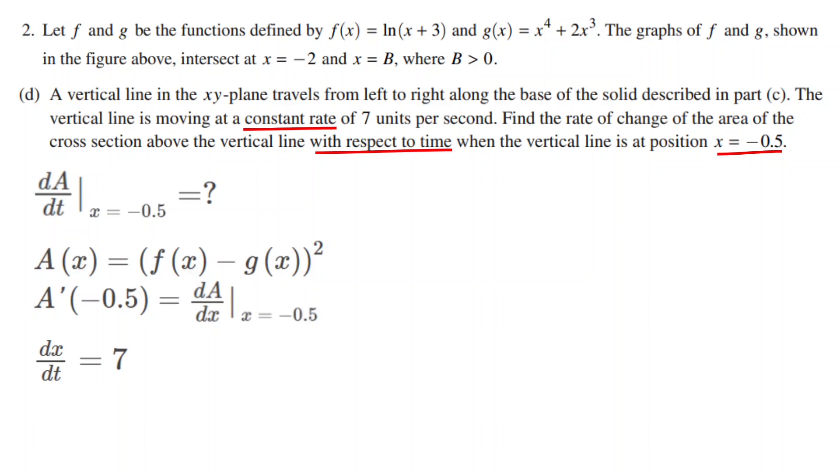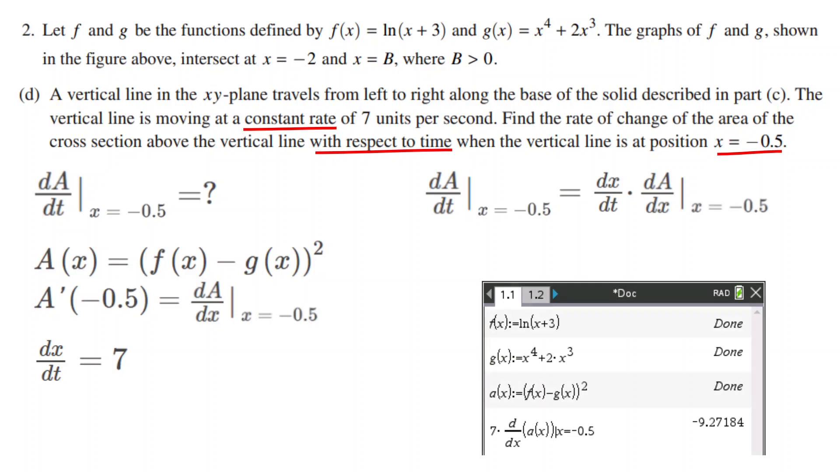7 multiplied by dA/dx at x equals -0.5 is equal to -9.271.